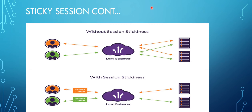Let's understand what sticky sessions are and how they work with a diagram. As you can see, there are two diagrams here — the first is without session stickiness and the other is with session stickiness. Let's say there are two users, and using a load balancer the traffic is getting distributed across two EC2 instances. When user one wants their data not to be distributed across instances and wishes to store it on one particular EC2 instance, they enable session stickiness.